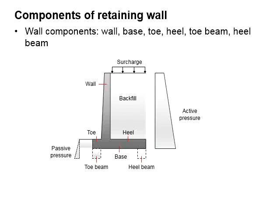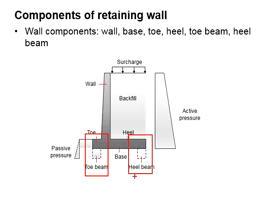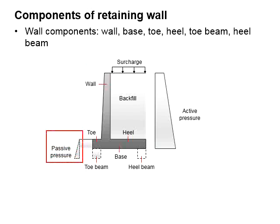This figure shows a typical retaining wall. It constitutes the wall and the base. The base can be separated into the toe and the heel. Under some circumstances, a toe beam or heel beam may be provided. The purpose is to ensure and take advantage of the passive pressure in resisting the active pressure.